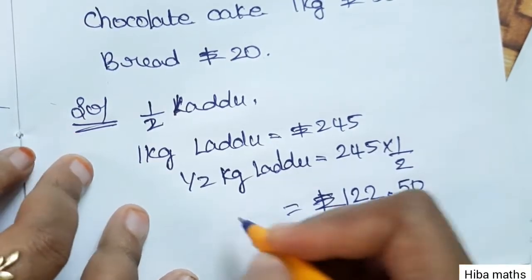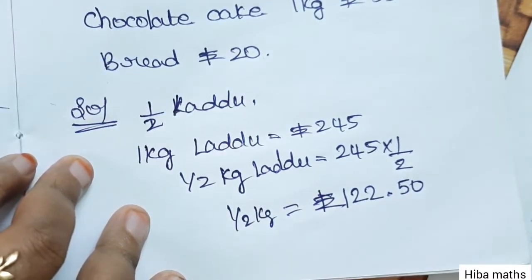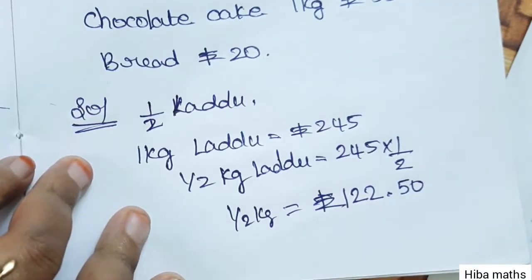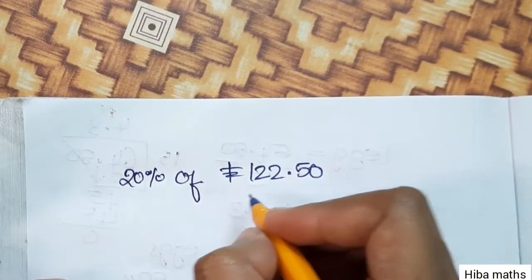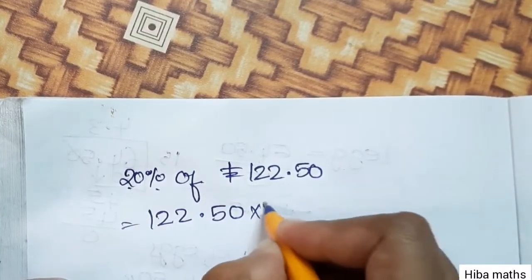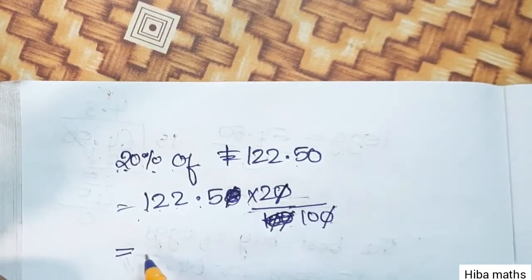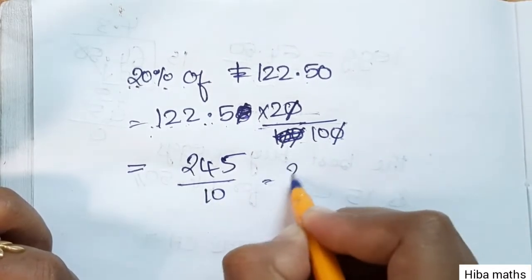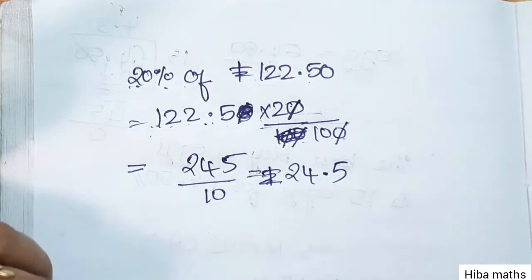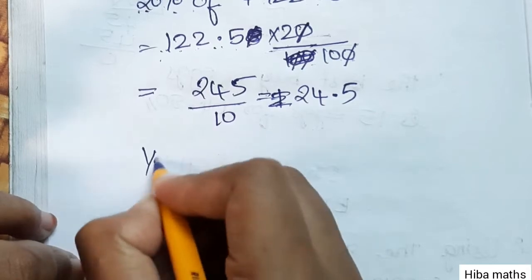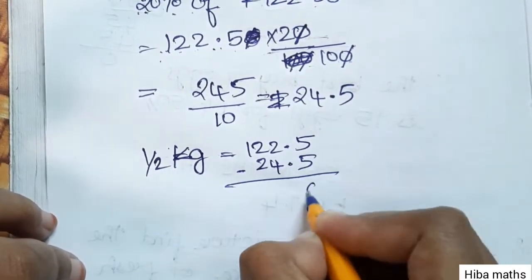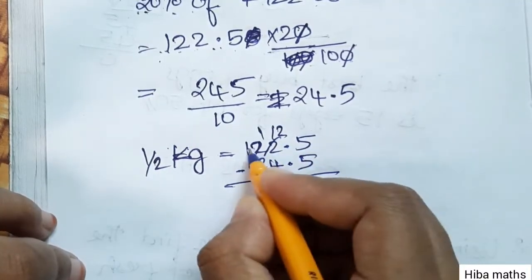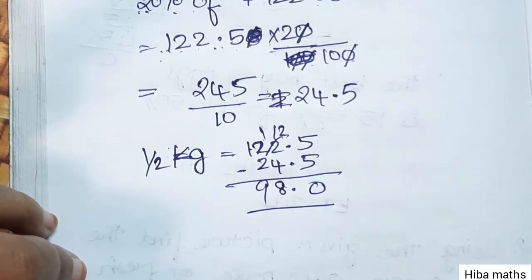Rs.122.50 is the price without offer. Now the offer is 20% off. We calculate 20% of Rs.122.50: that is 20/100 × 122.50 = Rs.24.50. So the offer price for half kg laddu is Rs.122.50 − Rs.24.50 = Rs.98.